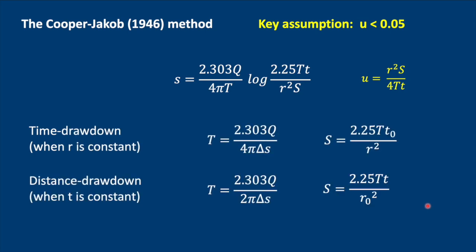So there are two methods for which we can use the Cooper-Jacob method. One is time-drawdown and one is distance-drawdown.